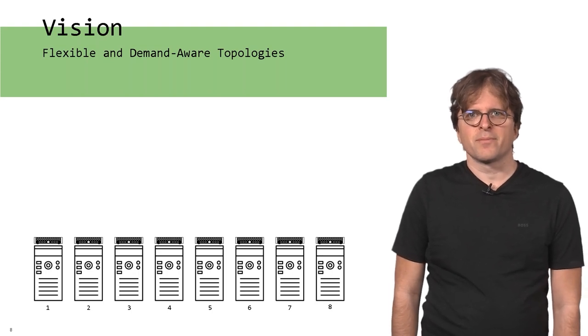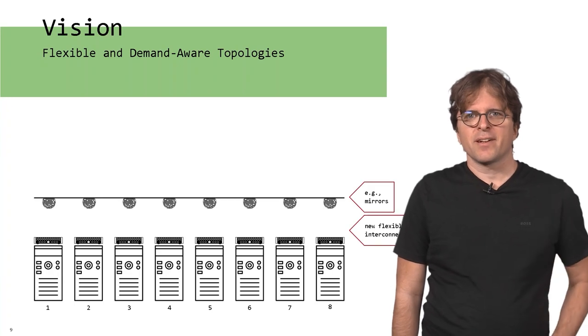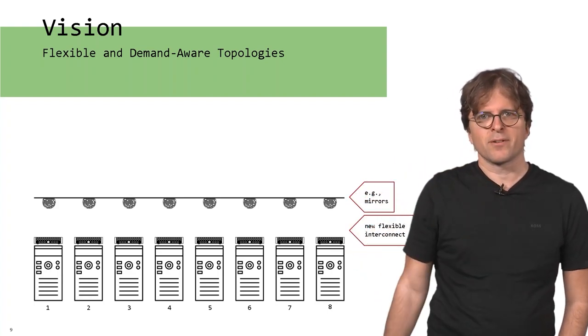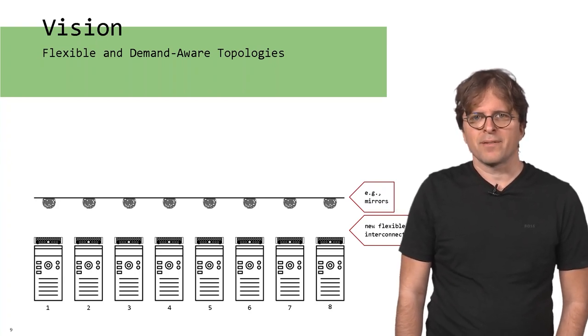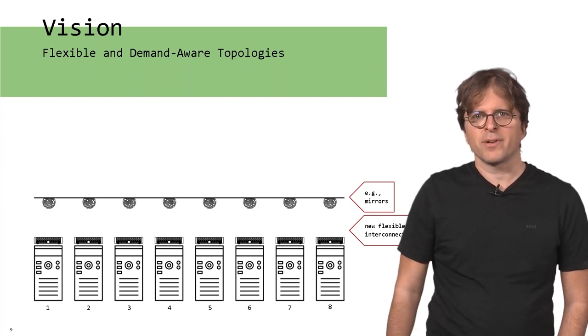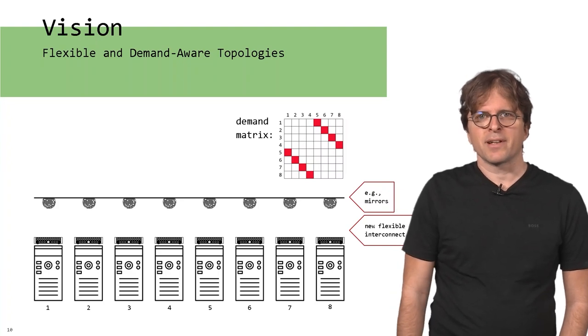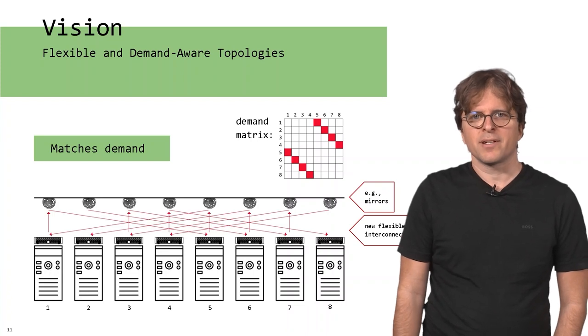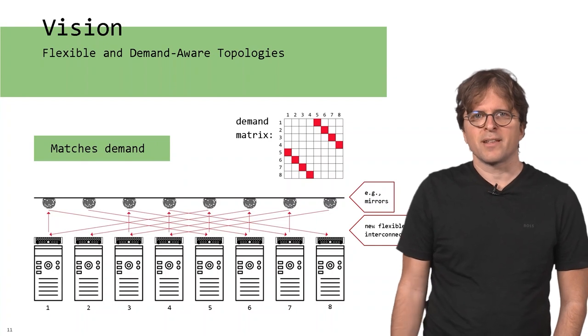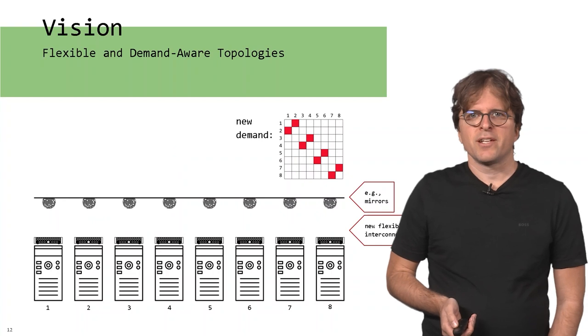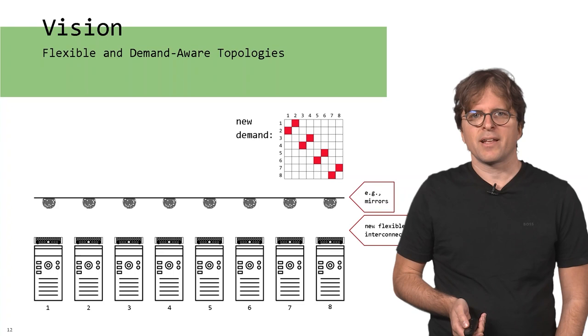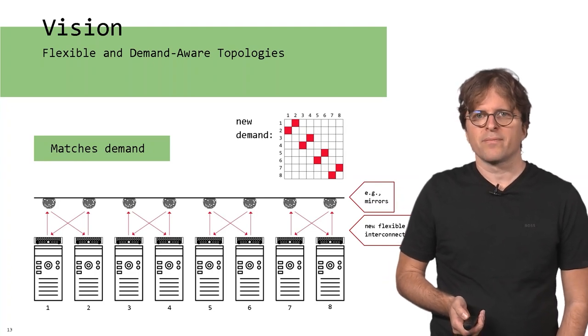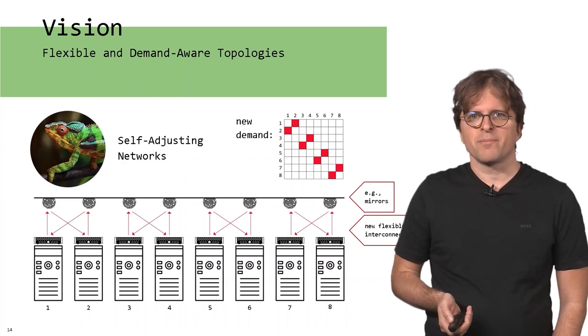The vision behind self-adjusting networks is to make networks more flexible and demand-aware. You can imagine a data center with racks at the bottom and mirrors at the ceiling. This is a technology built at MIT. This allows you to have a flexible interconnect by having lasers from the racks pointing to the mirrors. For example, if you have a demand matrix where one communicates to five, two to six, three to seven, and four to eight, you may want to interconnect it so that one is directly connected to five, two to six, three to seven, et cetera, so the interconnecting topology matches the demand. That's what we call self-adjusting networks - networks where the topology matches the corresponding demand.